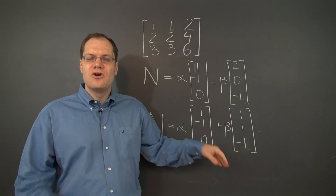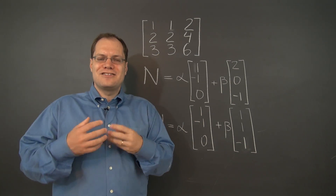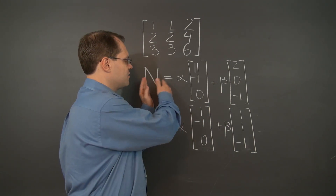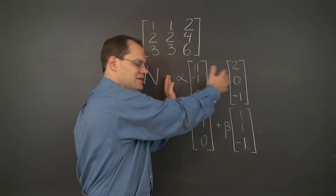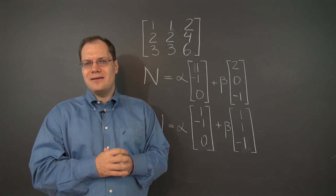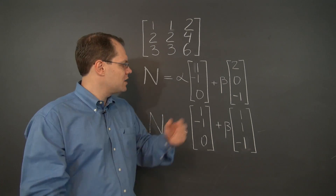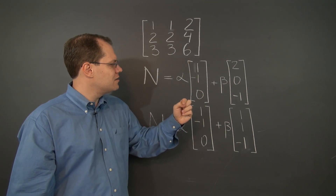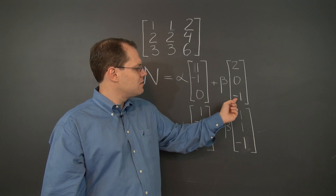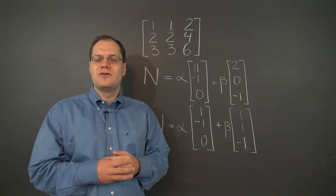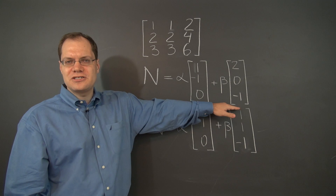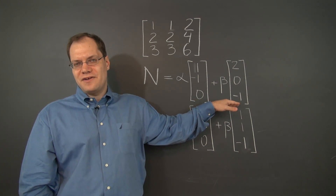When you look at these expressions, what you should imagine and connect with is not so much the expression itself but what it represents. This equality says that the null space is a certain collection of vectors. In that sense there's already no particular alpha and beta — it says there are infinitely many vectors. One of them is (3, -1, -1), another is obtained by taking alpha equals ten, beta equals one: (12, -10, -1). Listing infinitely many vectors would be impractical, so an expression is a much more effective way of capturing the set.